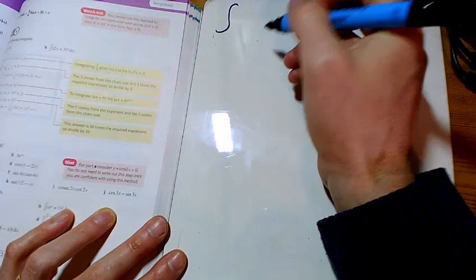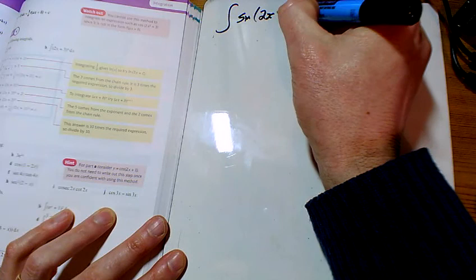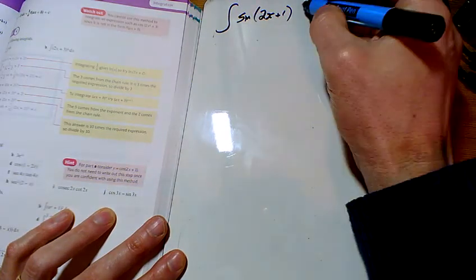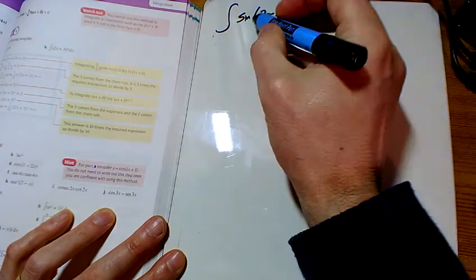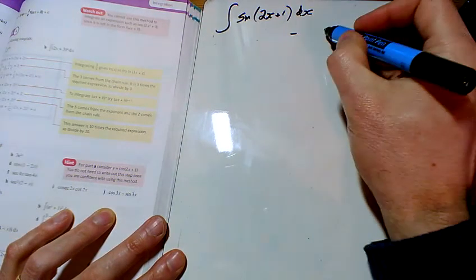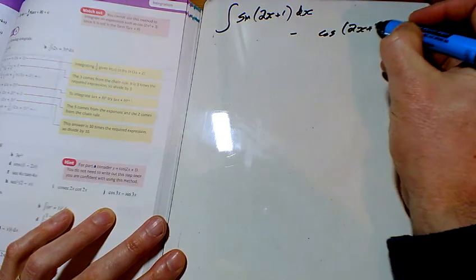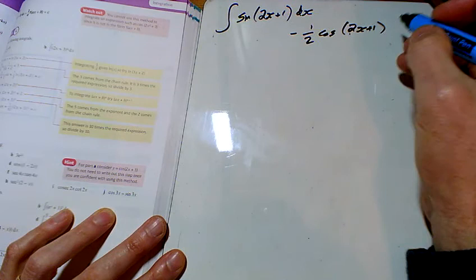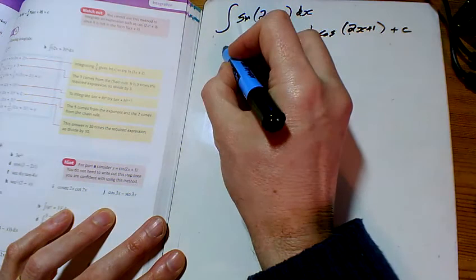We've now got numbers in these brackets, and you remember that when we differentiate these things we times by the number of x's. So when we're integrating these things, we're going to divide by the number of x's. Sine integrates to give minus cos, the bracket will always stay the same, and we're dividing by the number of x's here, so we'll put a half there. Remember my plus C as well.